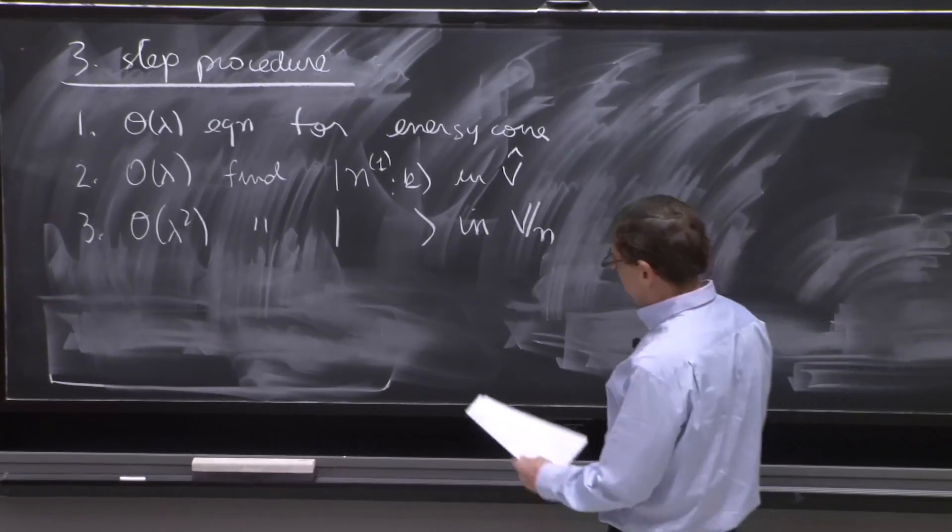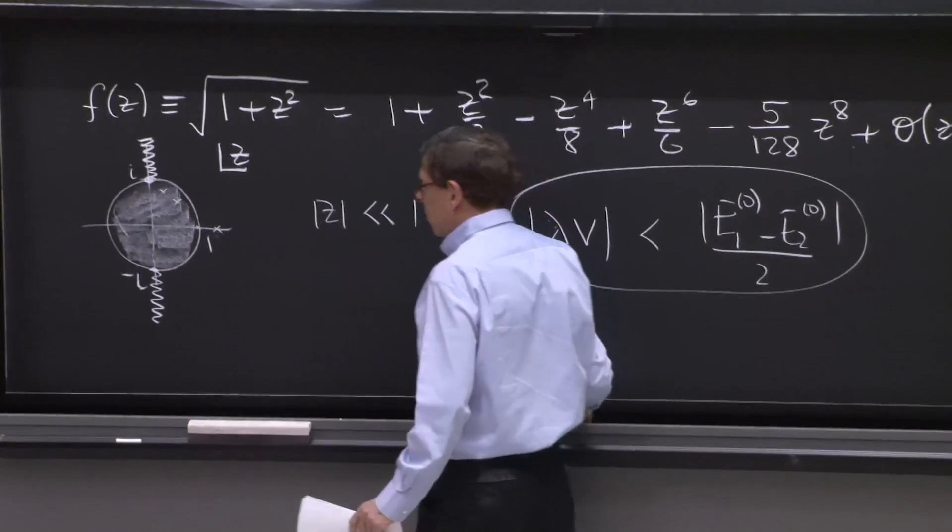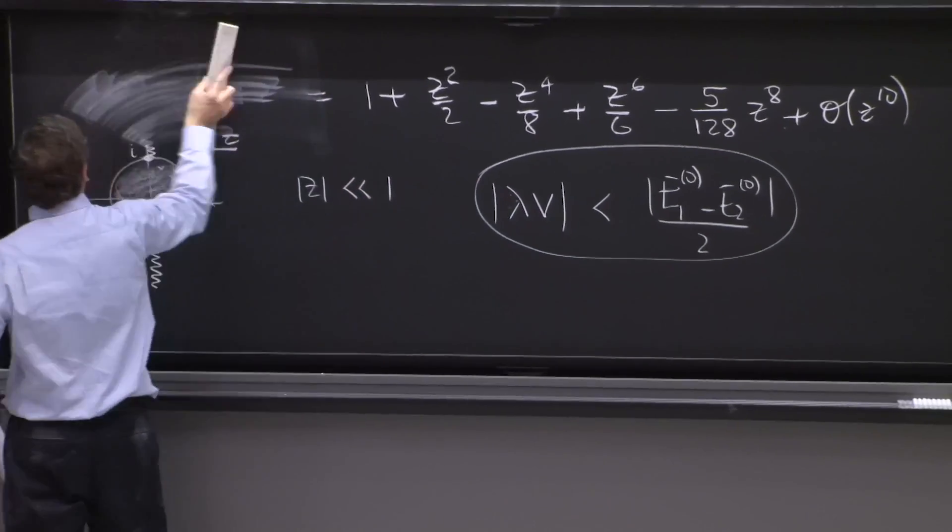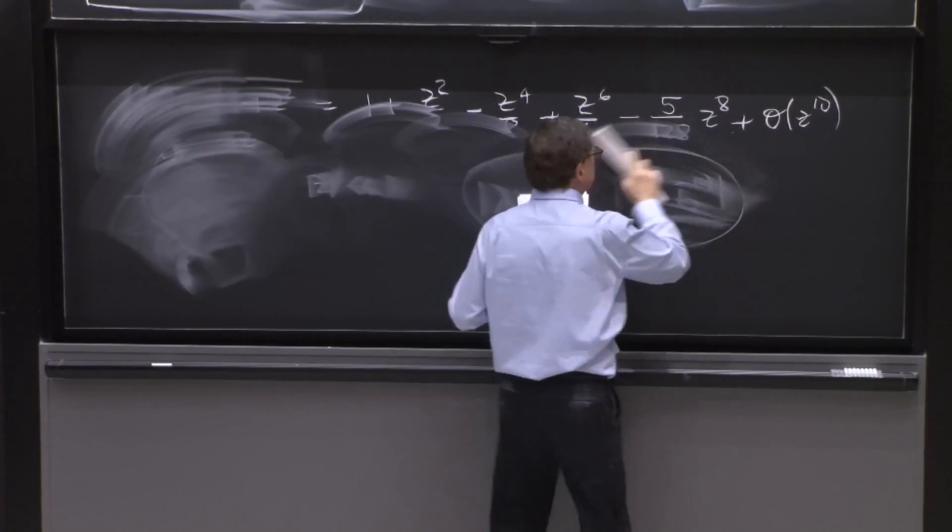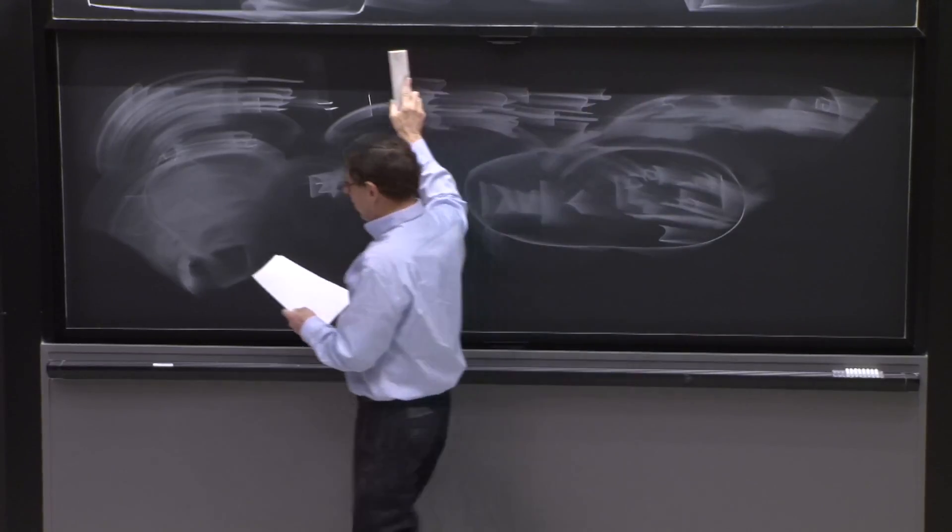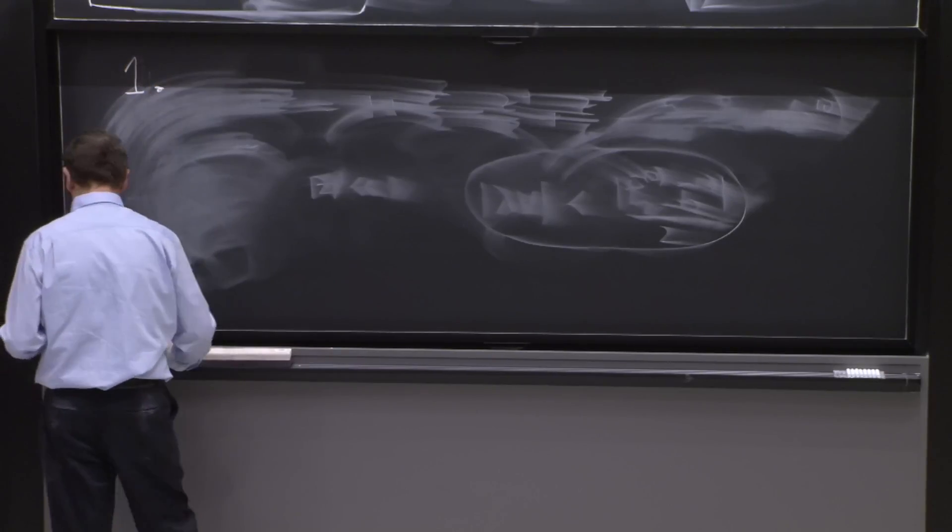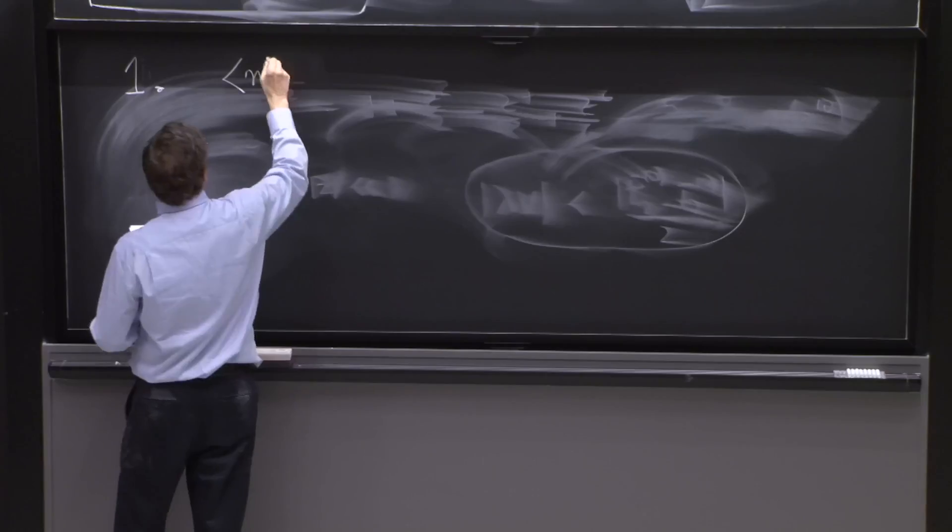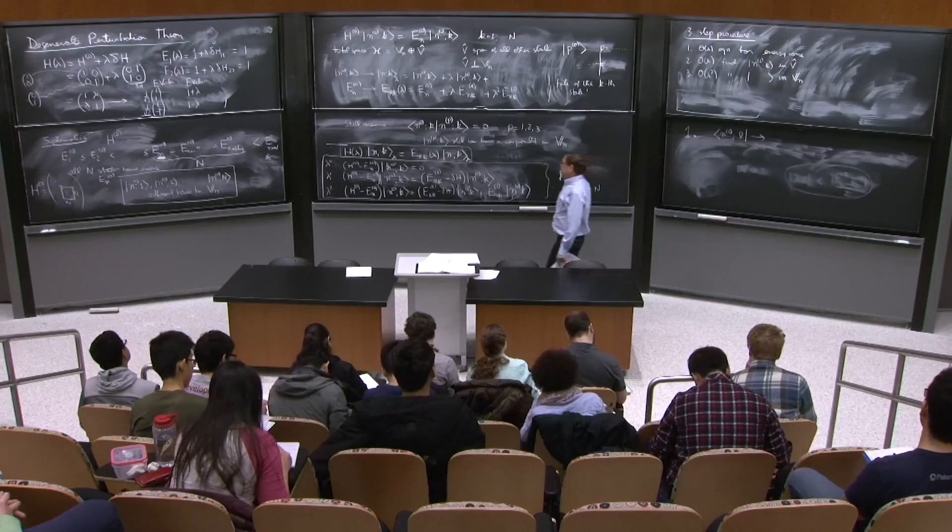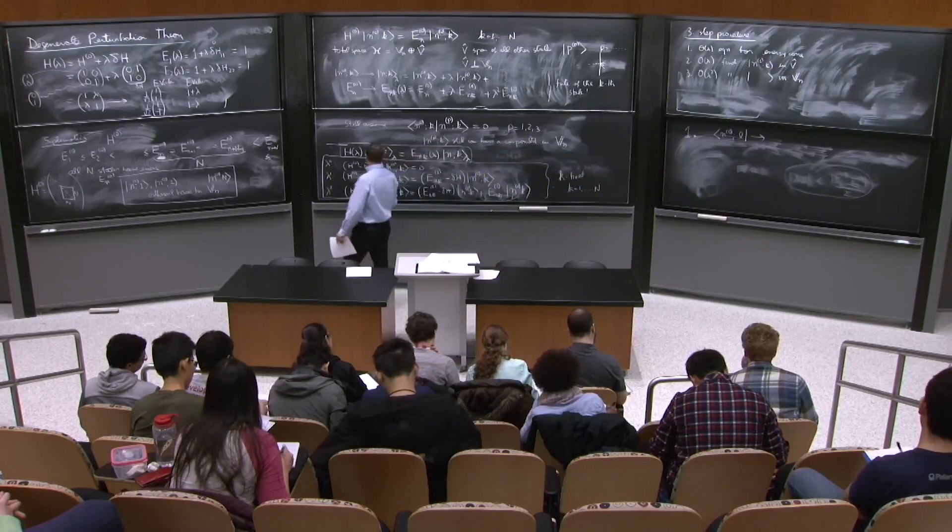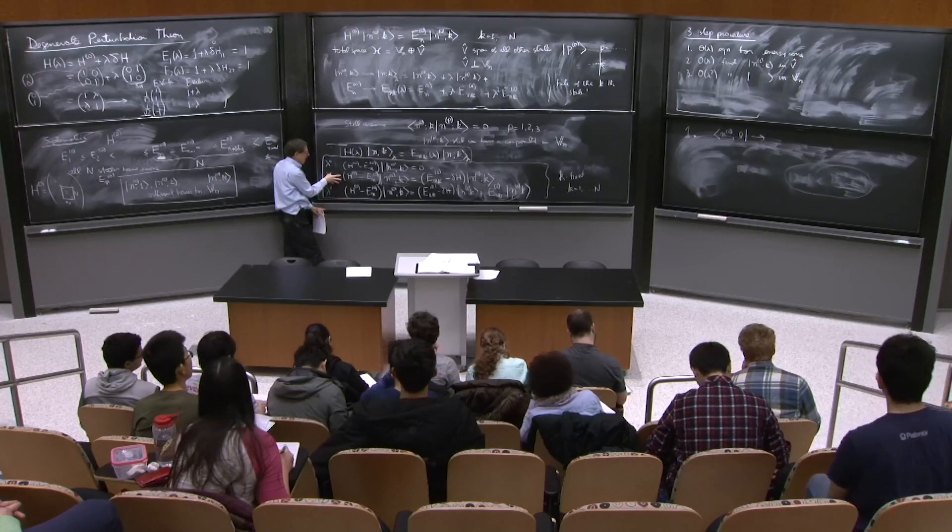So let's do the first step. And for that, we're going to overlap that equation, this order lambda equation. So for step one, we're going to hit the equation with n0l from the left. n0l from the left. Here it comes. It's here. What happens now?